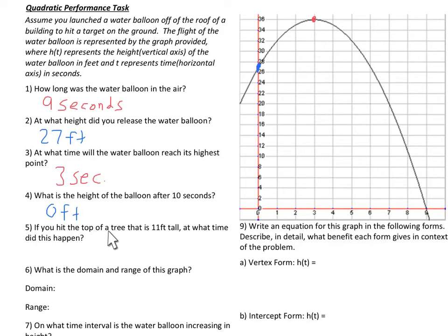If you hit the top of a tree that is 11 feet tall, at what time did this happen? So we're looking at 11 feet high right here. Let's go across. That would be, if it hit a tree sitting right there 11 feet high, then that means that it would hit at 8 seconds. So after 8 seconds, it hits 11 feet. So that's where it would have hit an 11-foot tall tree. So we would say that that would be at, since that's for what time, so that would be 8 seconds.